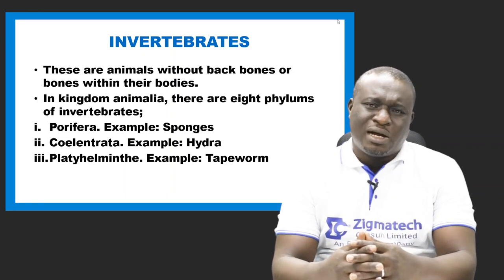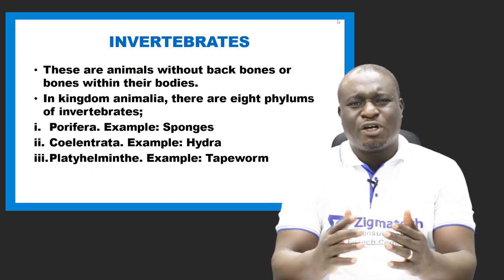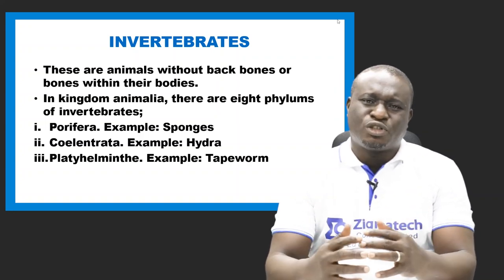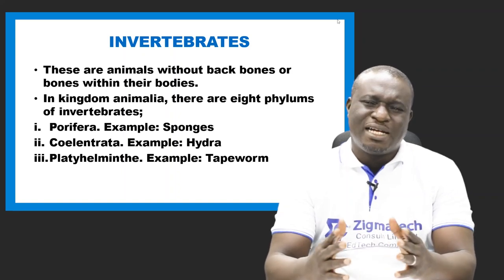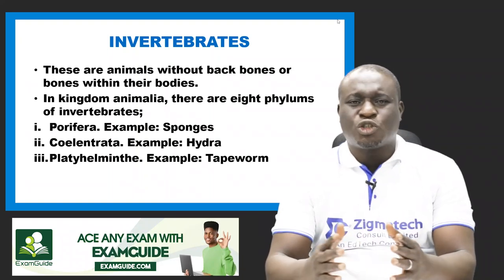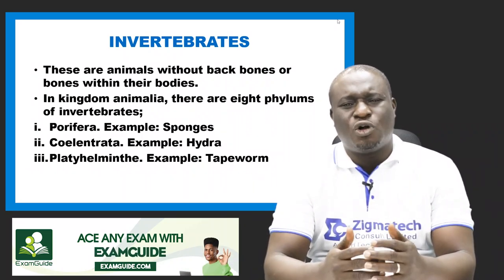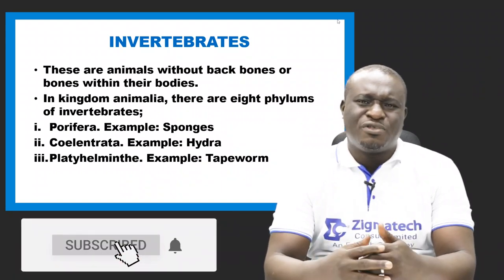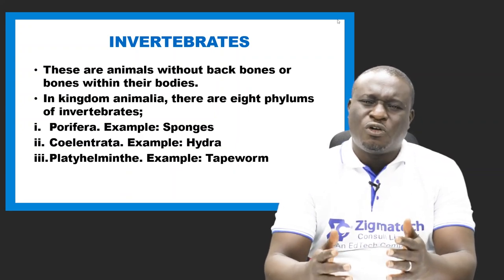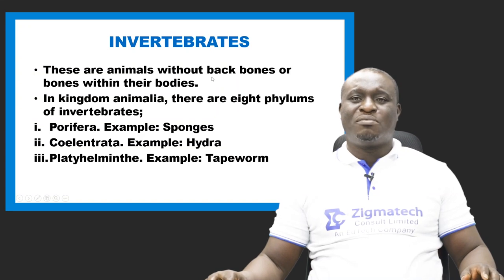For Porifera, an example is the sponge. The second on the list is Coelentrata — examples include hydra and sea anemone. We also have the Platyhelminthes, also called flatworms. Examples include the tapeworm and planaria.